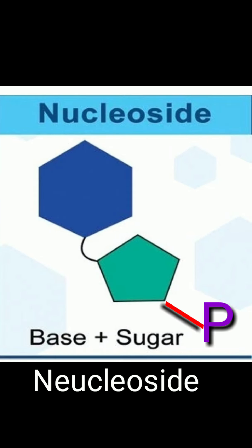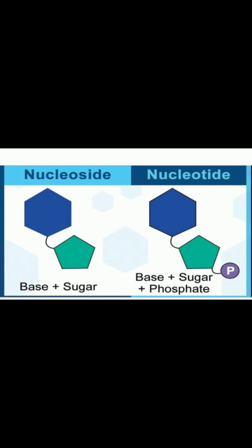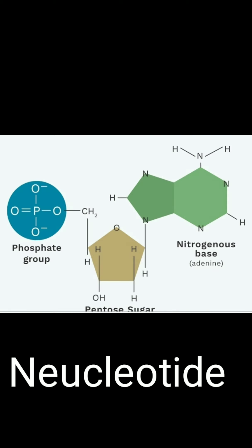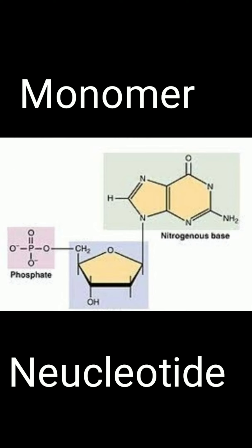When a phosphate group is attached to the fifth carbon of the deoxyribose sugar of a nucleoside by an ester bond, that is called a nucleotide. Thus a single nucleotide is composed of a nitrogenous base, deoxyribose sugar, and a phosphate group. This nucleotide is the monomer of the polynucleotide chain of a nucleic acid.